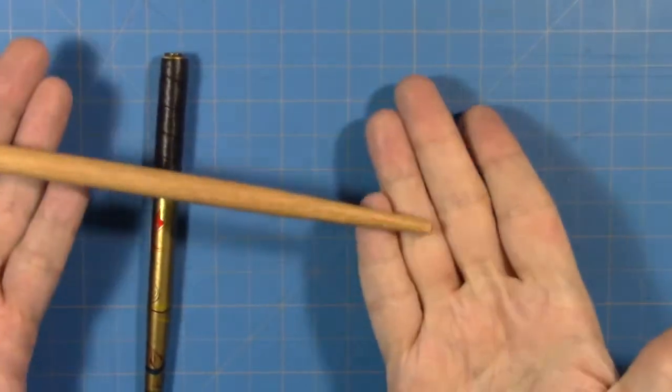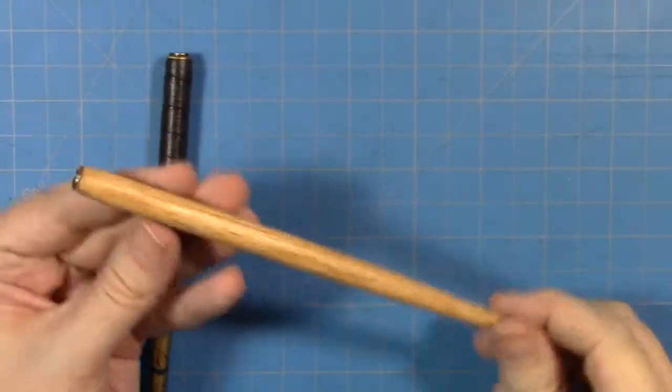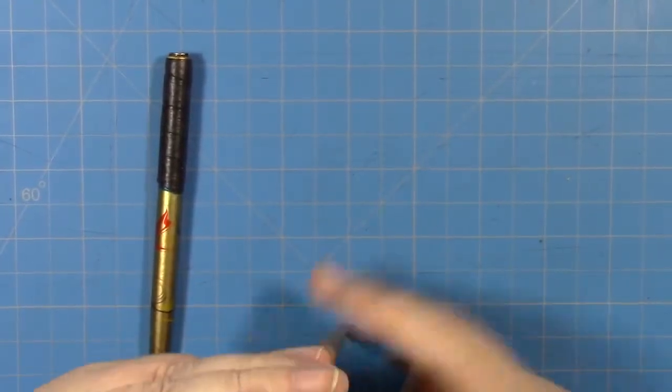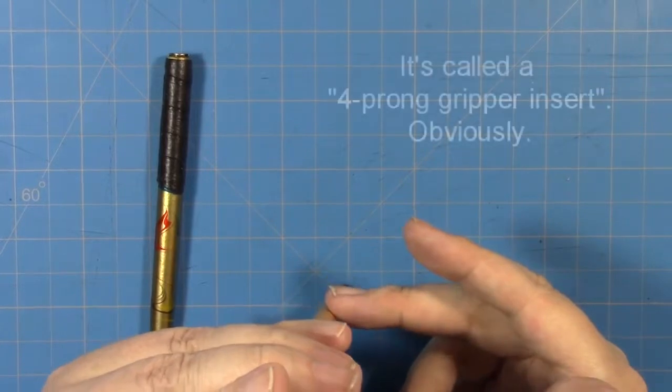What we have here is a nib holder. It's pretty plain. This one's made out of wood with a very conventional grip thingy.